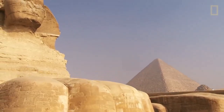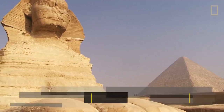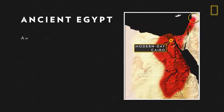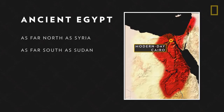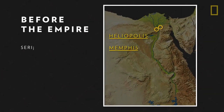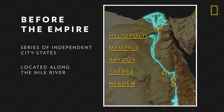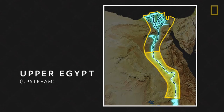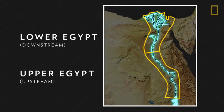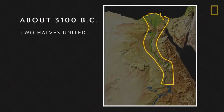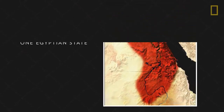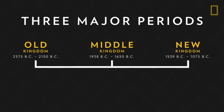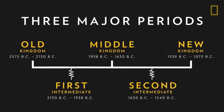The ancient Egyptian civilization lasted for over 3,000 years and became one of the most powerful and iconic civilizations in history. At its height, Egypt's empire stretched from modern-day Syria to today's Sudan. Long before it was an empire, ancient Egypt was a series of small city-states along the Nile River, divided into Upper Egypt in the south and Lower Egypt in the north. By about 3100 BC the two halves united. The civilization is divided into three major periods of prosperity — the Old, Middle, and New Kingdoms — and two intermediate periods of instability.